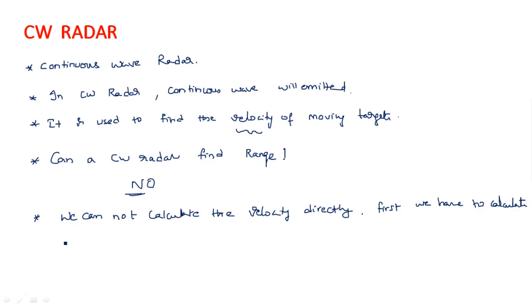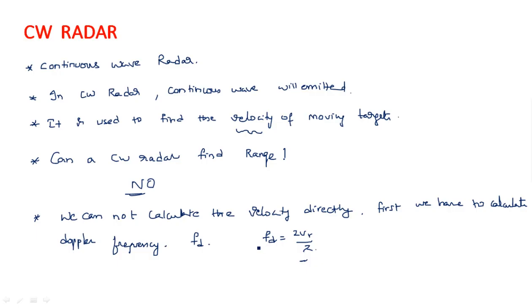First we have to calculate the Doppler frequency fd. I have explained in the previous video the relation between fd and vr. If we find fd from the radar system, we can calculate the relative velocity very easily because the relation is: fd = 2vr / λ. So with this relation we can calculate the relative velocity through the use of fd. If any stationary target is present, the output from the CW radar is simply zero.